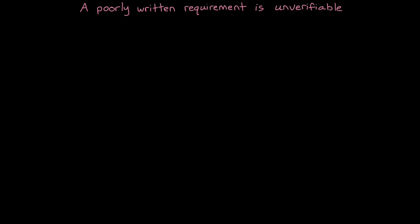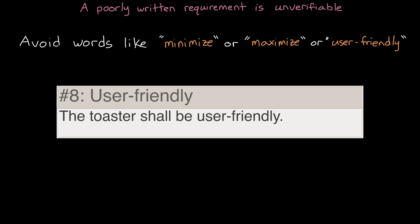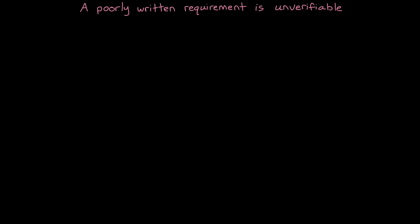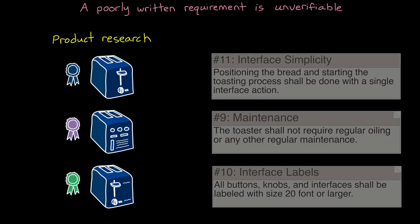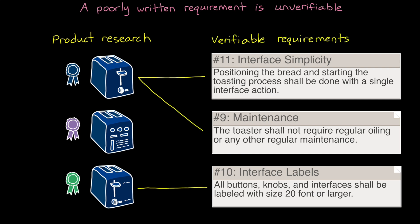Another way a requirement could be poorly written is if it's unverifiable. And being unverifiable might come from the use of words like minimize and maximize and user-friendly to describe the need. I mean, you could write a requirement that says that the toaster shall be user-friendly, but verifying that would be very subjective. A better approach would be to perform product research ahead of time where various design choices are ranked by the potential users based on how user-friendly it is, and then you write requirements for the features that are desired. Any requirements that you have that can't be verified should be removed or revised because you won't have a way of guaranteeing that the system meets it in the end.